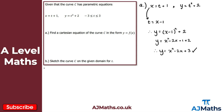For part (b) we're asked to sketch the curve C on the given domain for t, which goes from minus 3 to 3. I'm going to set up a table from minus 3 to 3 and substitute those values into the equations for x and y. So we've got t, x equals t plus 1, and y equals t squared plus 2.